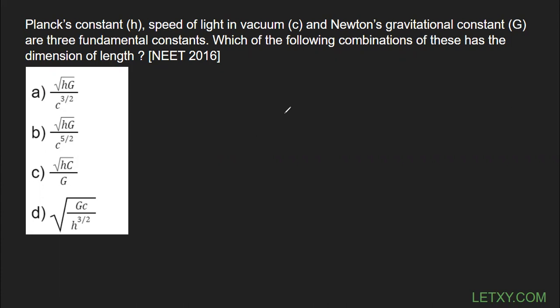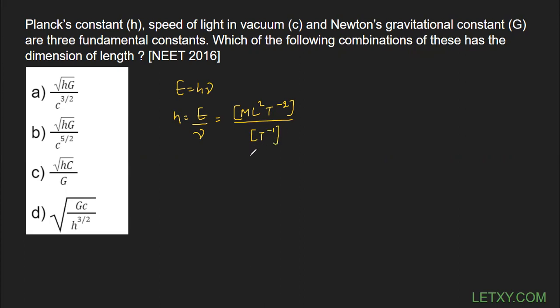First of all, we have to find out the dimensional formulas for all of these: Planck's constant, speed of light in vacuum, and the gravitational constant G. There is a formula E = hν, so h = E/ν. Energy has the dimensional formula ML²T⁻², and frequency ν has the dimensional formula T⁻¹. So simplifying, h comes out to ML²T⁻¹. This is the dimensional formula of Planck's constant.